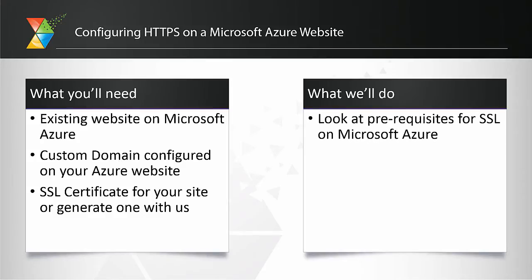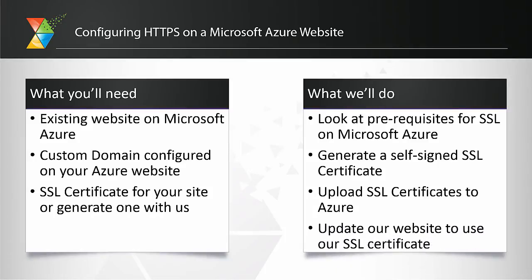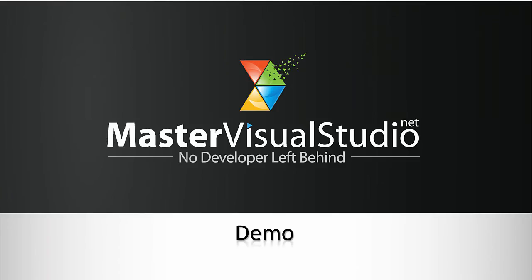Today we're going to first look at prerequisites for SSL on Microsoft Azure — what you need to do on your site and what you get out of the box. Then we'll take a look at generating a self-signed SSL certificate using the makecert utility, upload it to Azure, and update our website to use those SSL certificates. Let's jump over, take a look at Azure, and then generate some certificates.